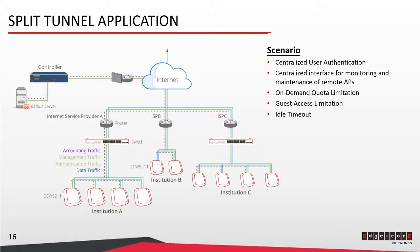This is one example of split tunnel deployment. Here we have deployed wireless networks at three institutions — A, B, and C — and each of these institutions uses a different ISP for internet service. There is a controller deployed at the main office that governs the wireless networks running in these institutions. When customers connect to an SSID using split tunnel, they will be redirected to the EWS controller for authentication, and after successful authentication, their data traffic will be routed to the internet directly from each of these institutions. In this scenario, they have placed limitations on network usage through on-demand and guest authentications. Furthermore, an idle timeout threshold has also been configured, so that authenticated users will be kicked once their network usage is up or when their idle time reaches the idle timeout threshold.